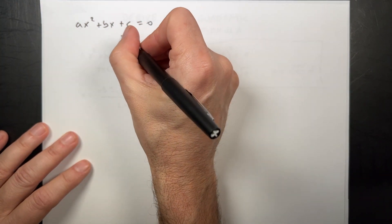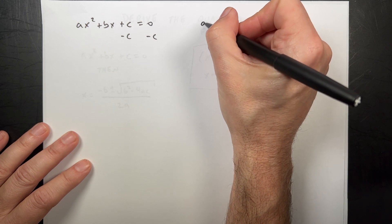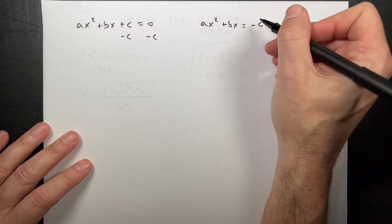ax squared plus bx plus c equals zero. So the first thing I'm going to do is subtract c from both sides. So now I have ax squared plus bx equals negative c.